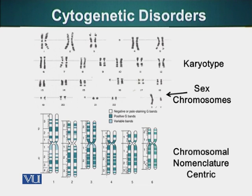If the P arm is relatively much smaller than the Q arm, these are submetacentric chromosomes. Chromosomes in which the centromere is at the tip, having a very, very small P arm, are called acrocentric chromosomes. There are also telocentric chromosomes, found generally in mice, and holocentric chromosomes in which the centromere runs along the entire length of the chromosome — we don't have those in humans.